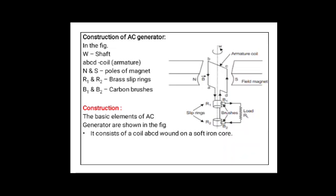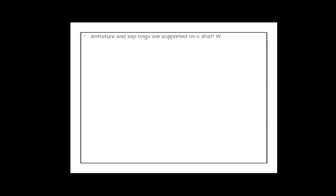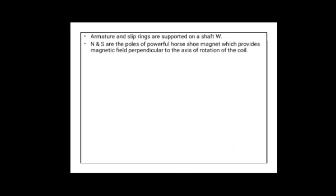It consists of a coil ABCD wound on a soft iron core. This coil with the soft iron core is called the armature. The ends of the coil are connected to two rings, R1 and R2 — you can observe it in the diagram. One end of the coil is connected to ring R1 and the other end to R2. The armature and slip rings are supported on shaft W. N and S are the poles of a powerful horseshoe magnet, which provides a magnetic field perpendicular to the axis of rotation of the coil. Brushes B1 and B2 are permanently in contact with these slip rings.